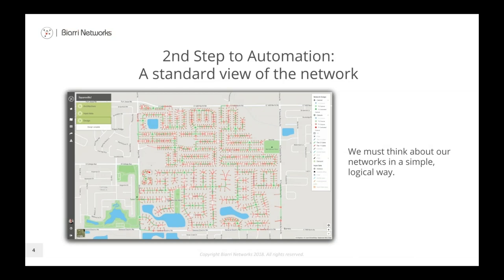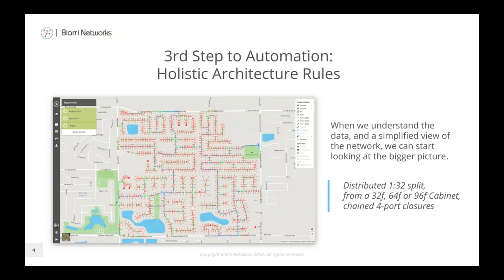Tier 2 cabinets are typically the location of primary splitters in the network. In a centralized split network you'll often have 1:32 splitters in these tier 2 cabinets; a distributed split will have splitters in the tier 1 closures as well. Finally, tier 3 cables connect all tier 2 cabinets back to the central office, or to the tie-in point if you're connecting into an existing fiber network. The third key thing with automation is holistic architecture rules — a more automated approach allows global optimization rather than local optimization, using architectures that are a set of rules applied to the entire design area.